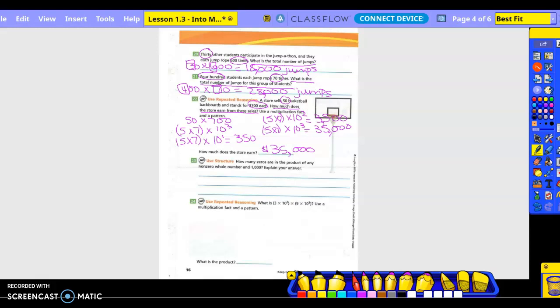Number 23, use structure. How many zeros are in the product of any non-zero whole number and 1,000? Okay, so how many zeros would there need to at least be? Three. So at least three.